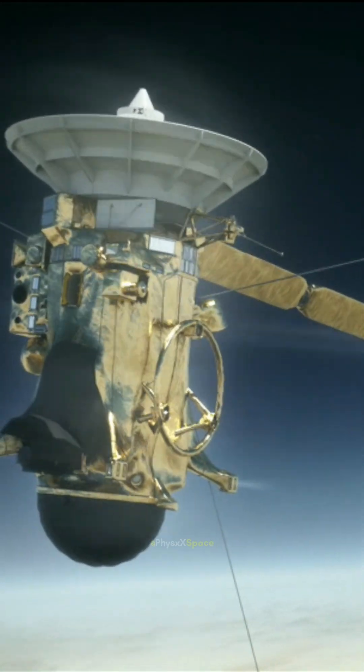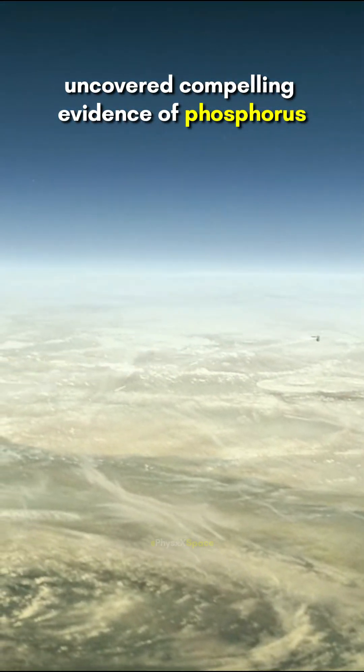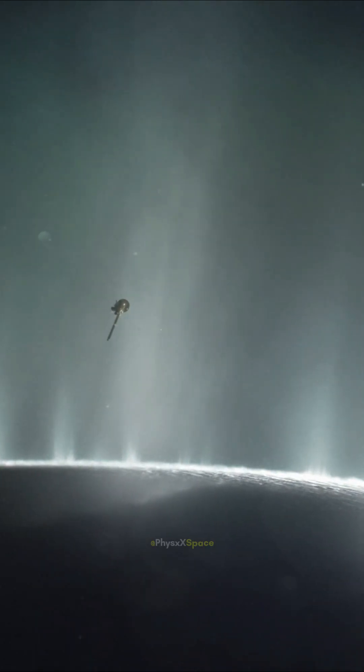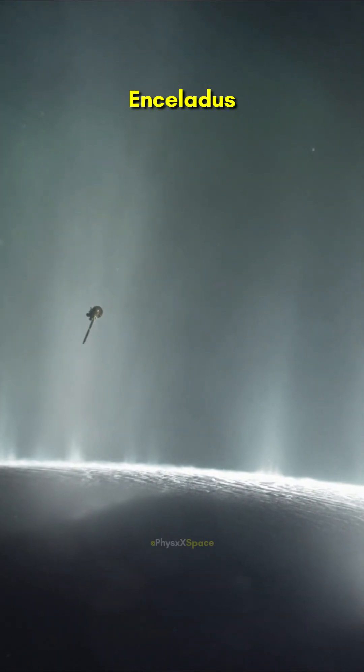Can you believe it? They dug into data collected by Cassini spacecraft over 15 years ago and uncovered compelling evidence of phosphorus in the water geysers shooting out from the surface of Enceladus into space.